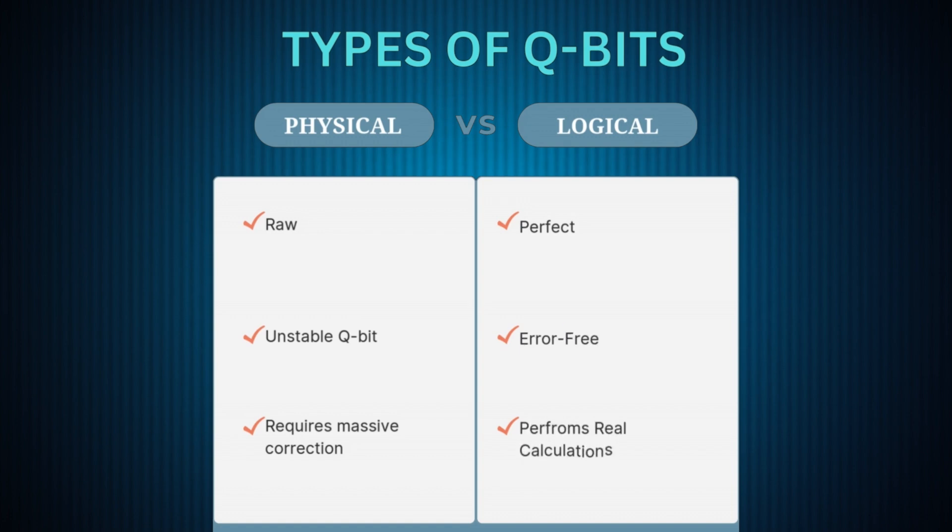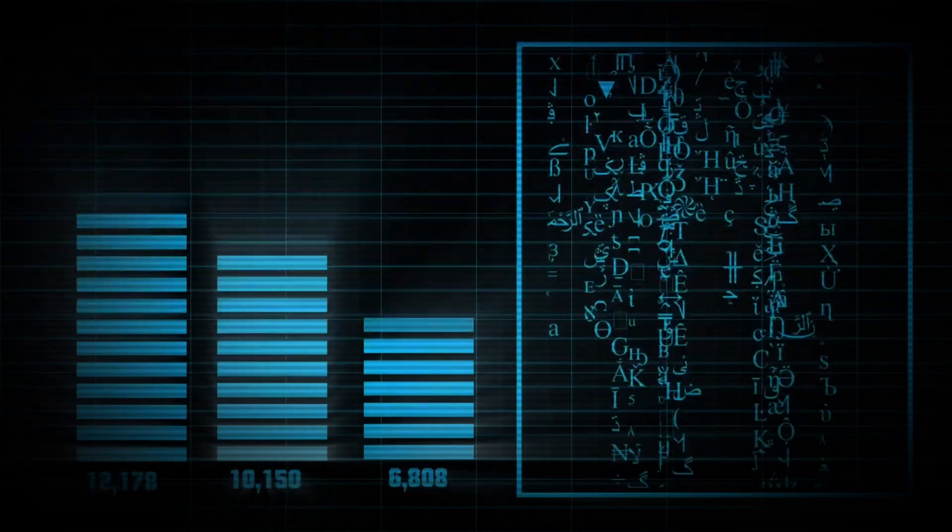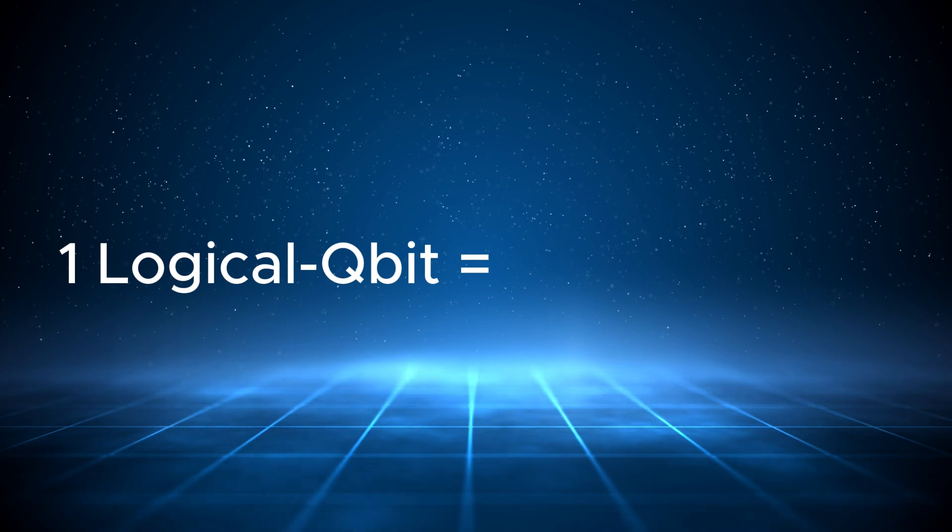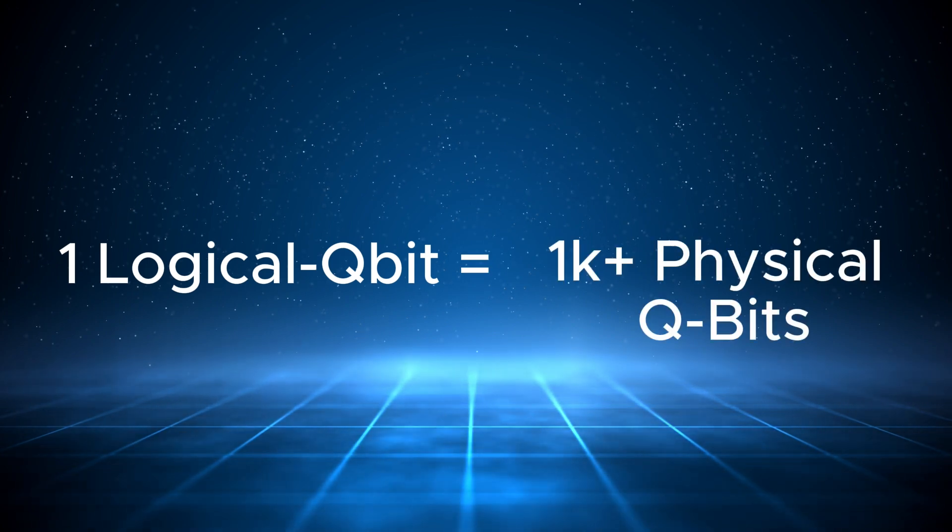And here's the catch: because quantum computers make tons of errors, one logical qubit can require thousands of physical qubits. So if we need 4,000 logical qubits, we actually need millions and millions of physical qubits.